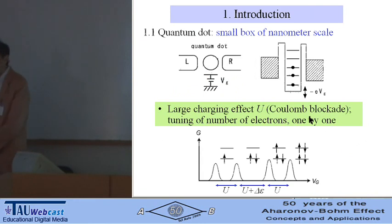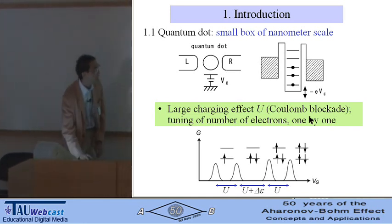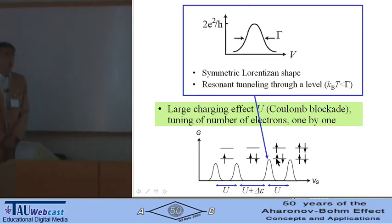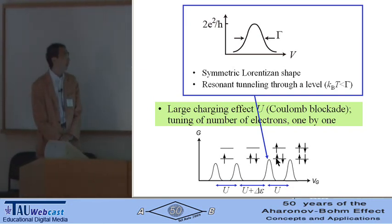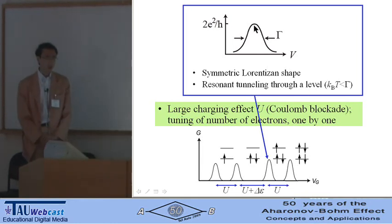In the introduction, let me start with the quantum dot. A small box of nanometer scale couples to two leads. Energy levels are discretized in the quantum dot, and with the large charging energy U, so-called Coulomb blockade, you can tune the number of electrons in the quantum dot one by one using the gate voltage. Each peak of the current shows a symmetric Lorentzian shape due to resonant tunneling through one of the quantized energy levels. Conductance becomes 2e² over h at the peak, and width is determined by the level broadening due to the tunnel coupling.